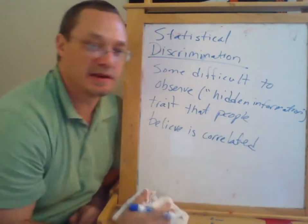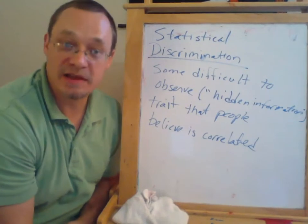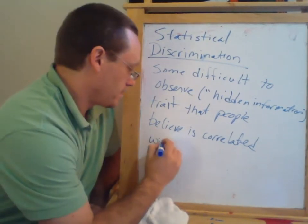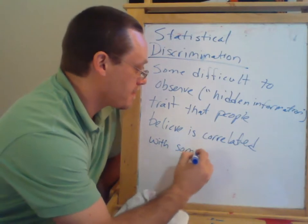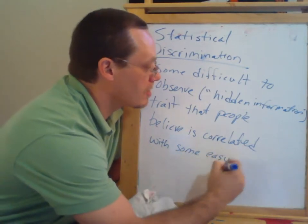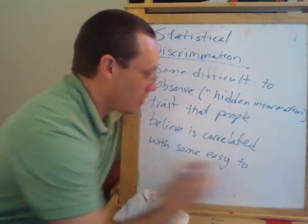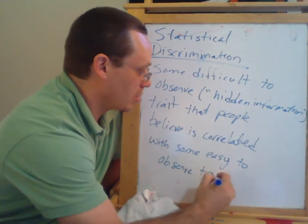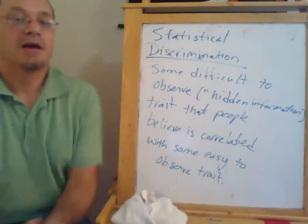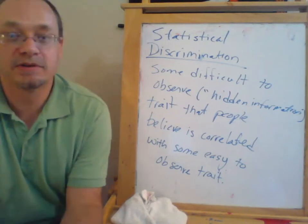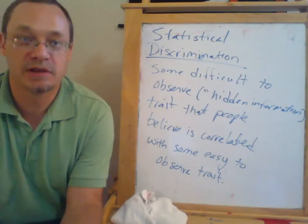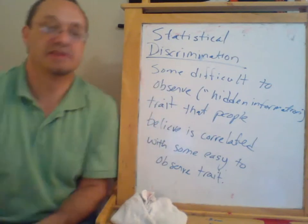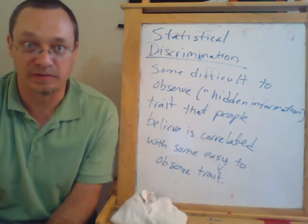Two things are correlated when they tend to go together, but they don't always do so. And people are going to use the easy-to-observe trait to try and make guesses about the difficult-to-observe trait.